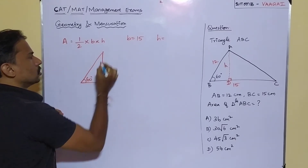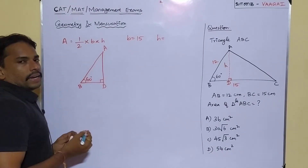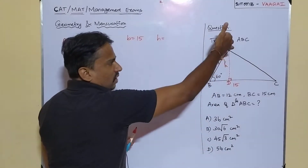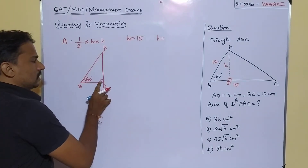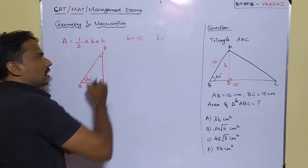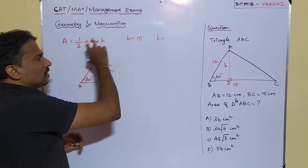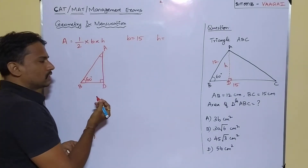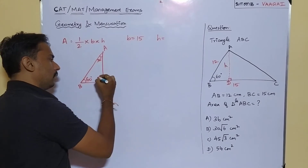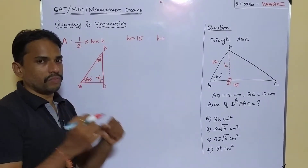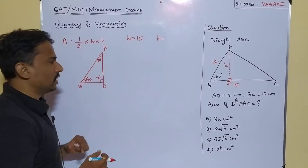In triangle ABD, this angle at D is 90 degrees because the perpendicular meets the base at a right angle. Angle B is 60 degrees. Since the sum of angles in a triangle is 180 degrees, and 60 plus 90 equals 150, the third angle at A must be 30 degrees. Also, side AB is 12 centimeters as given.